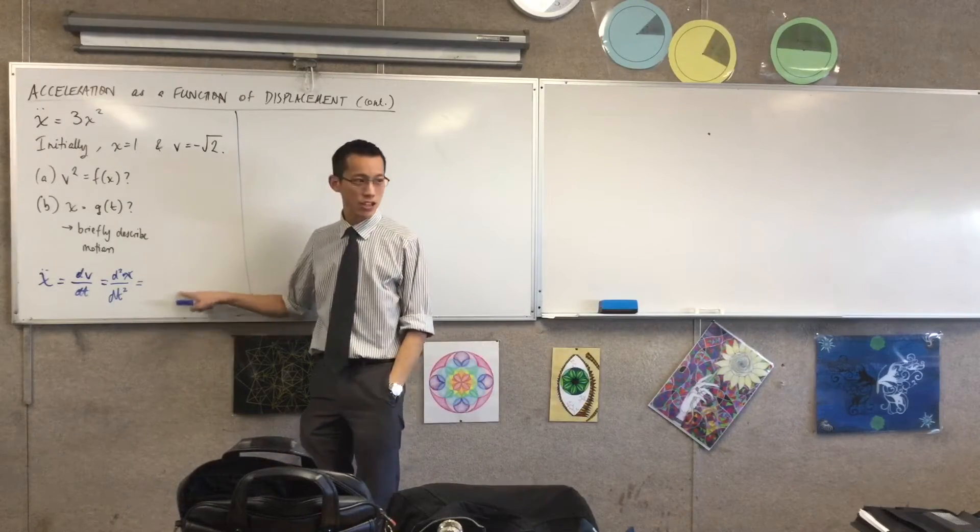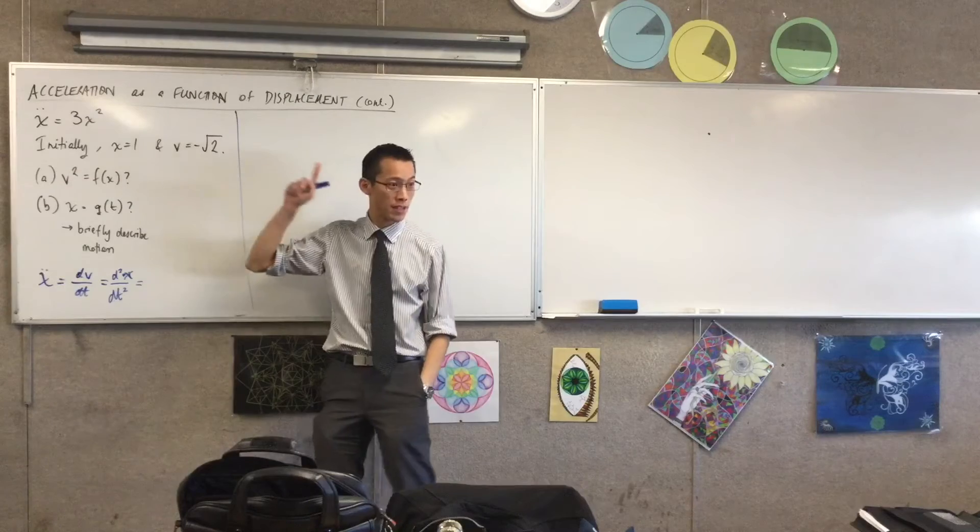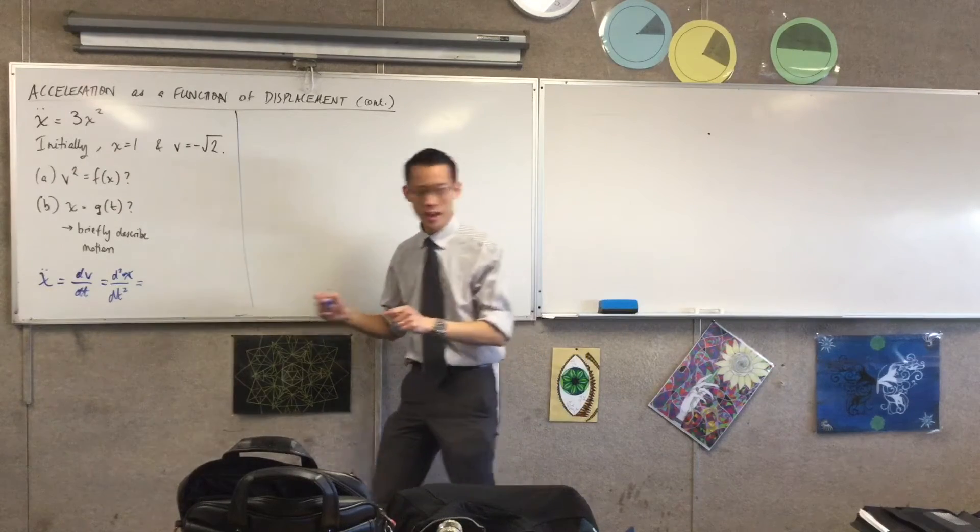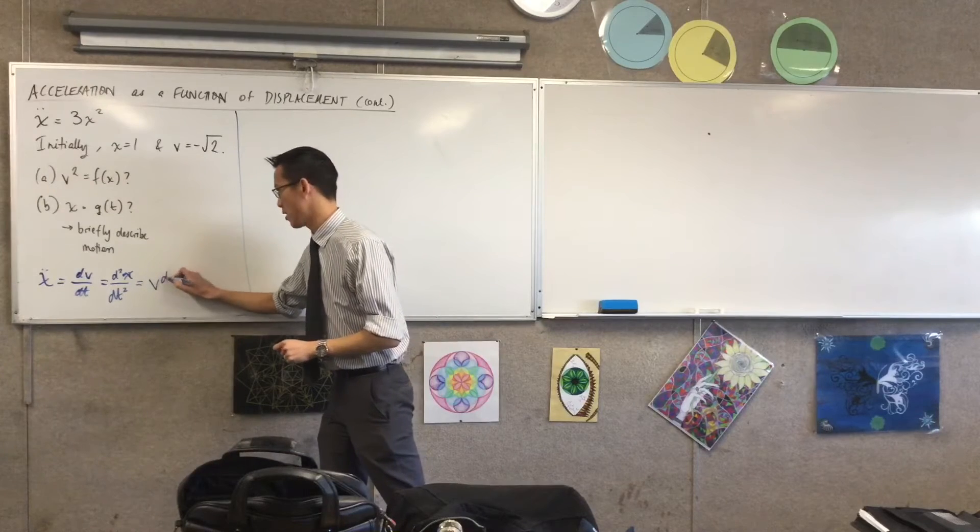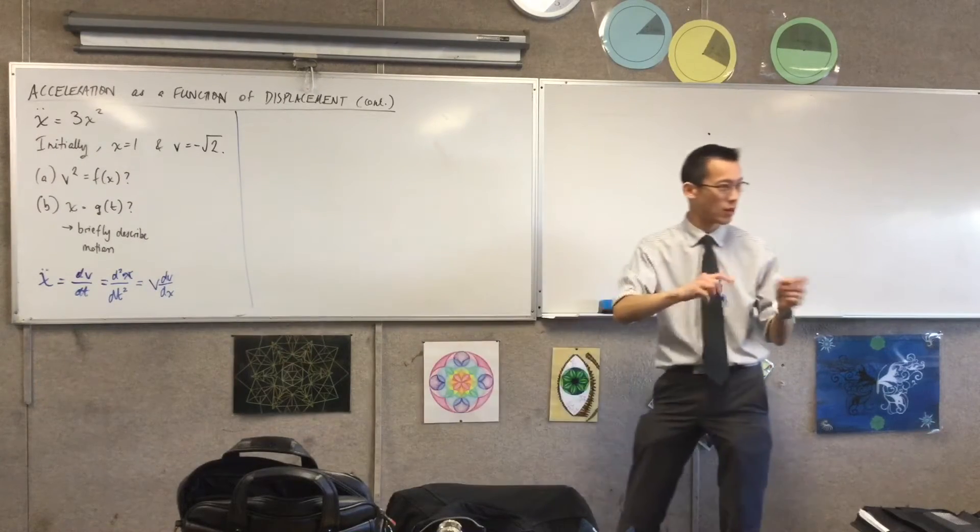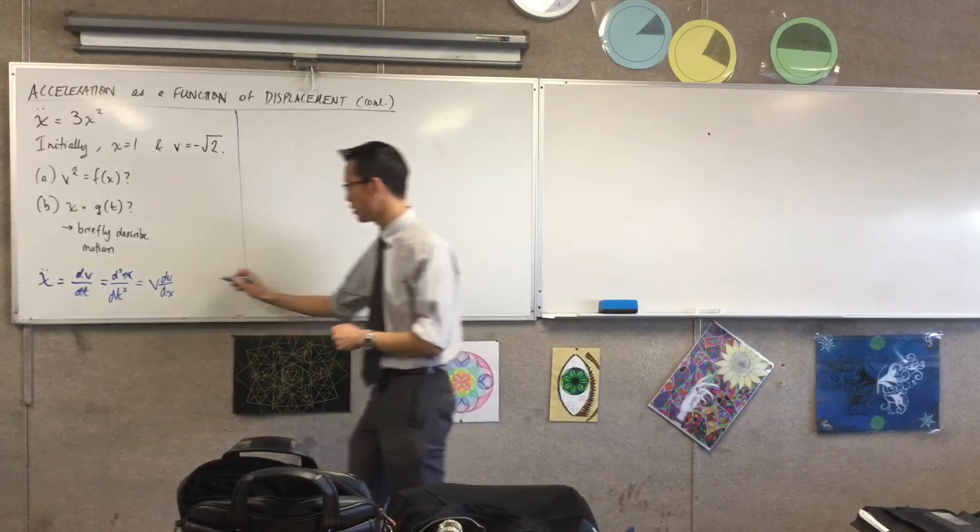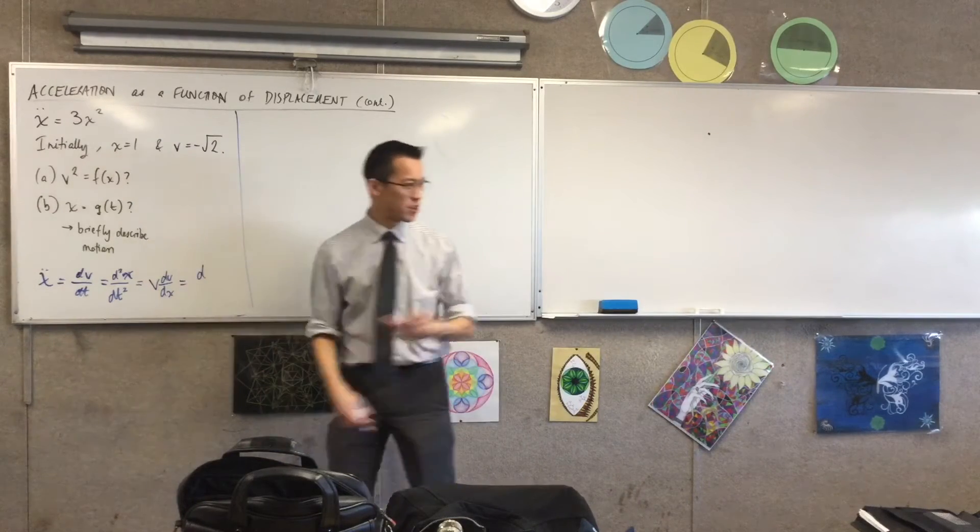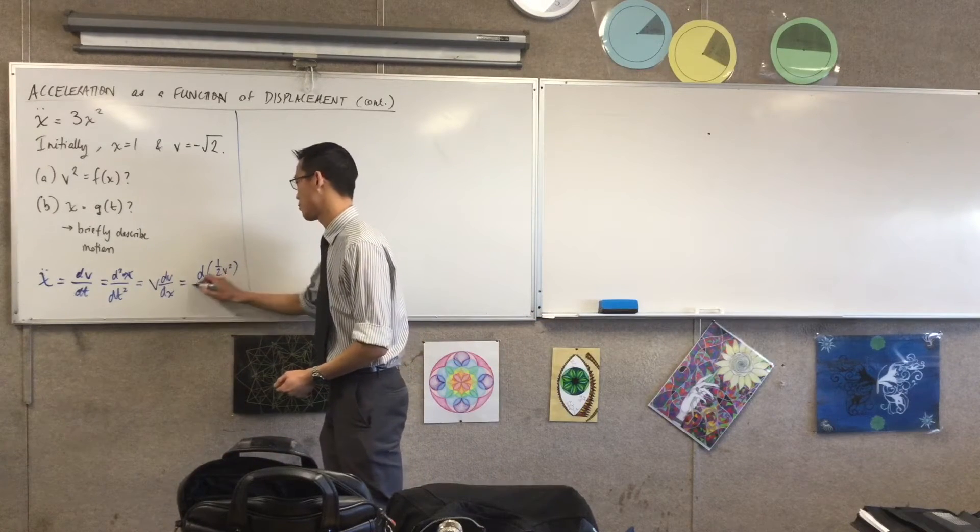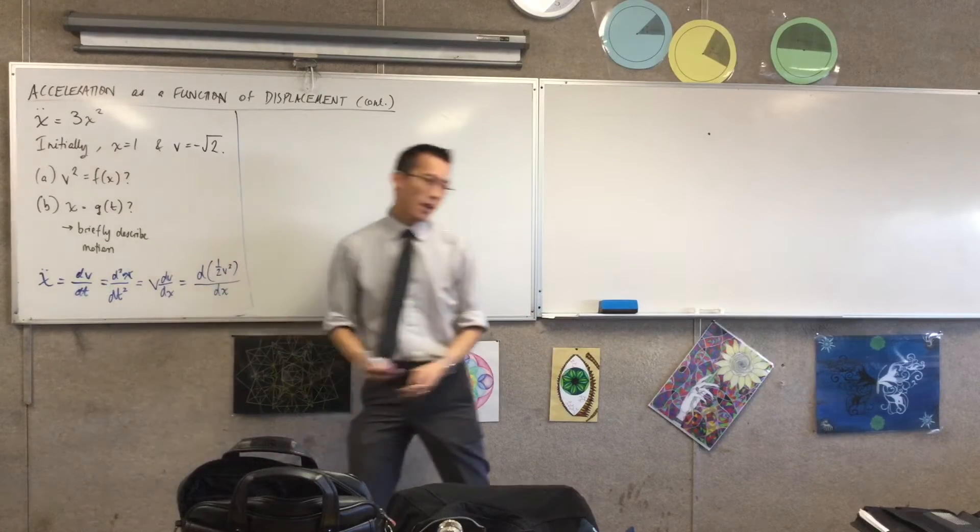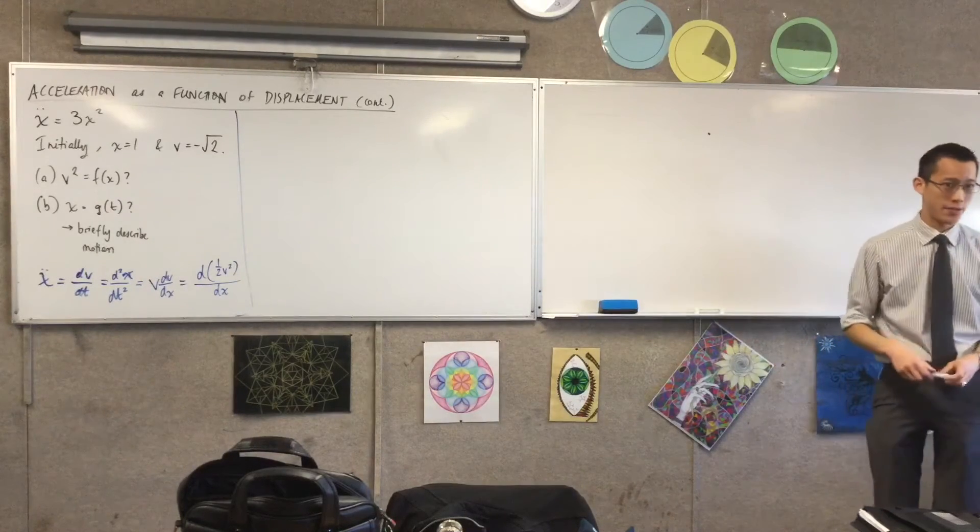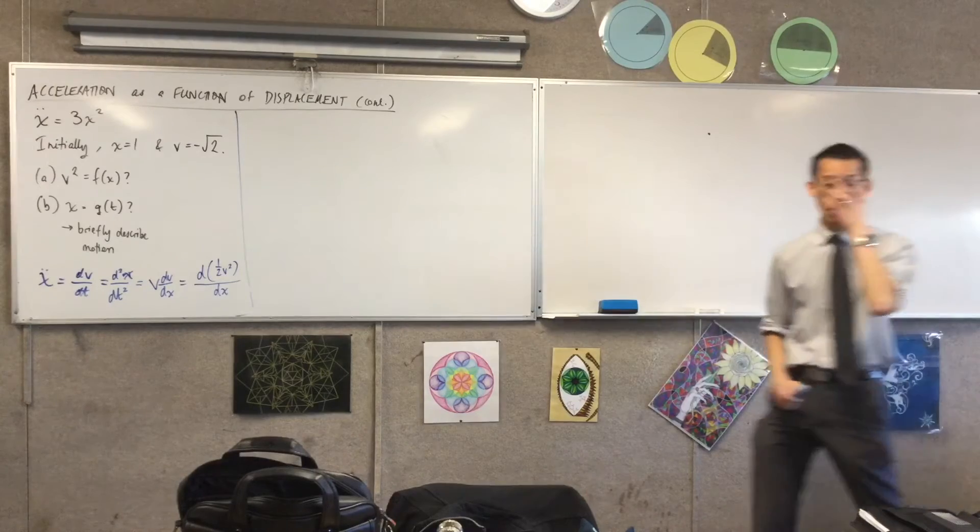The first one was acceleration not in terms of displacement, but acceleration in terms of velocity. Do you remember that one? What was it? It started with v dv/dx. Now we're not going to use that one in this particular example, but we are going to use the next one, which was a few steps underneath. We got d/dx times half v squared. You can write this a couple of different ways - half v squared up here, it really legitimately does not matter.